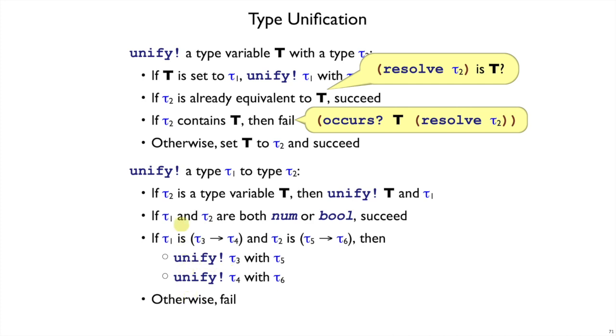Finally, if we get tau1 and tau2 that don't fall in these cases, maybe one of them is num and the other one is bool, or one of them is an arrow type and the other one is not an arrow type, then unify can just fail and report a problem because it won't be able to find consistent types in that case.